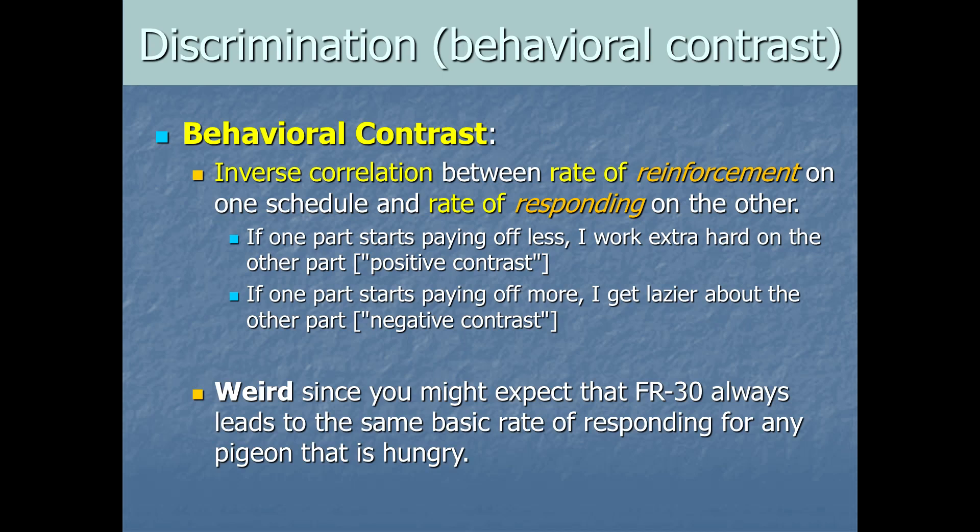It's weird since you might expect that an FR-30 schedule always leads to the same basic rate of responding for any pigeon that's hungry. In fact, that's what dozens and dozens and dozens of studies had already shown. You get a very consistent and very predictable rate of responding to a particular schedule of reinforcement. Now, if you change that schedule of reinforcement, the rate of behavior changes with it in a very predictable way. But if you keep the schedule of reinforcement the same, their behavior stays the same. That's steady state responding. We learned all about that with schedules of reinforcement. So the schedule of reinforcement should be dictating how much they do the behavior, right? The schedule seems to control behavior. Yet here, we find a change in behavior without a change in the schedule itself. Just a change in some other schedule happening at some other time.